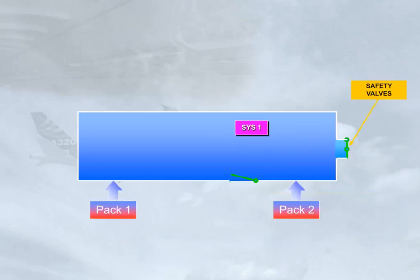Two independent pneumatic safety valves are installed at the rear pressure bulkhead above the flotation line, and they operate to avoid a cabin differential pressure from going too high or too low.